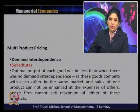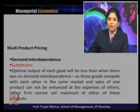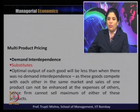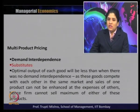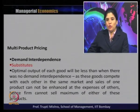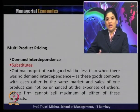In the case of substitute goods, the optimal output of each good will be less than when there is no demand interdependence. These goods compete with each other in the same market, and the sale of one product cannot be enhanced at the expense of the other. Since both goods come from the same firm, generally the optimal output for each good will be less as they operate independently in the market.